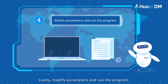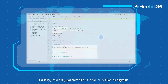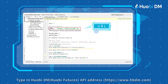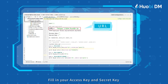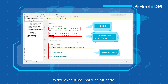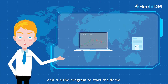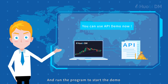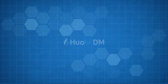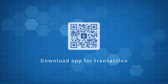Lastly, modify parameters and run the program. Type in the Hwabi Futures API address. Fill in your access key and secret key. Write the executive instruction code and run the program to start the demo.